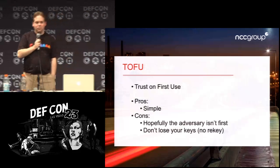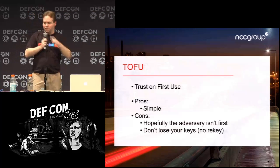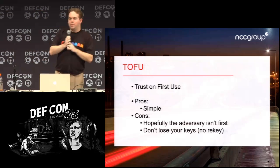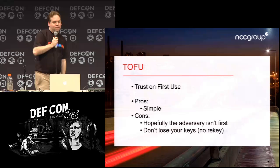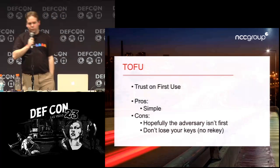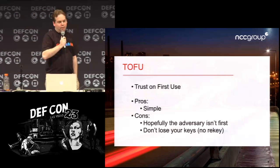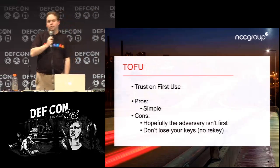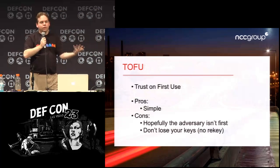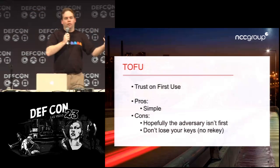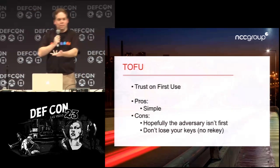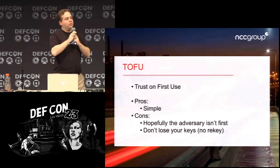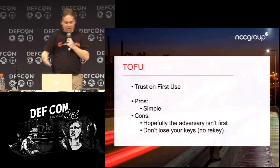The bad news with TOFU is that if the adversary was already there for the first connection, you've stored their key instead of the one you wanted. The other bigger problem is if Bob drops his phone in the toilet — later, Alice tries to send a message and gets a different key back. She might ask over the messaging app 'did you drop your phone in the toilet?' but the eavesdropper just says yes. So you're stuck.